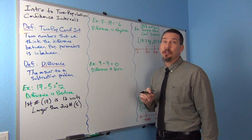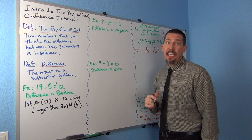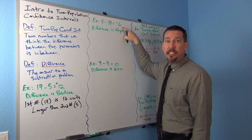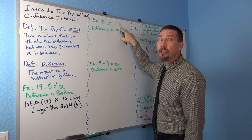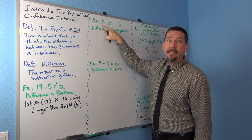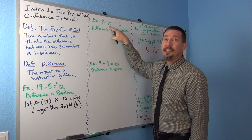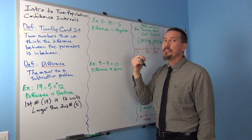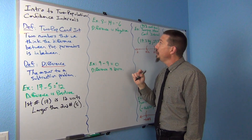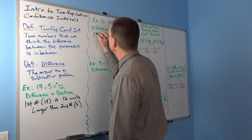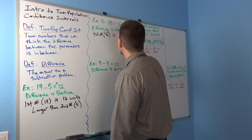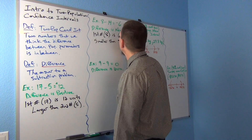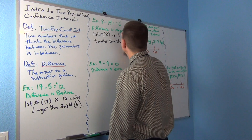Now what happens if I subtract two numbers and the answer comes out negative? I'll give you an example: 8 minus 14 is negative 6. What is that actually telling us? A negative difference actually tells you that the first number is this amount smaller than the second number. So this is telling me that the 8 is actually 6 units smaller than the 14. Notice I didn't say negative 6 units smaller — the negative tells me it's smaller. So this negative 6 difference tells me that the first number, which was 8, is 6 units smaller than the second number, which was 14.